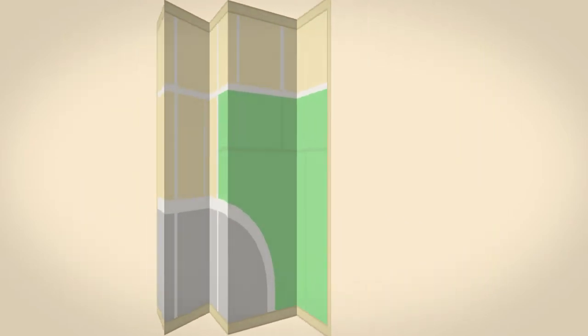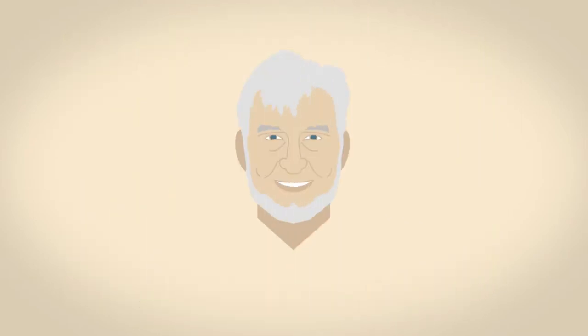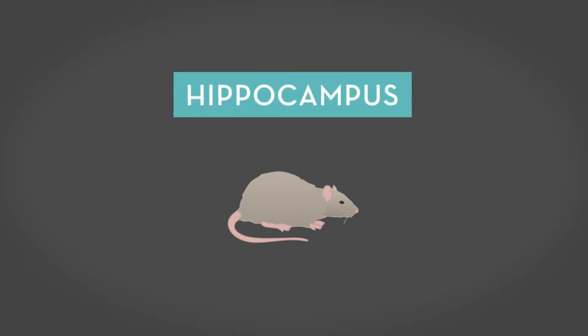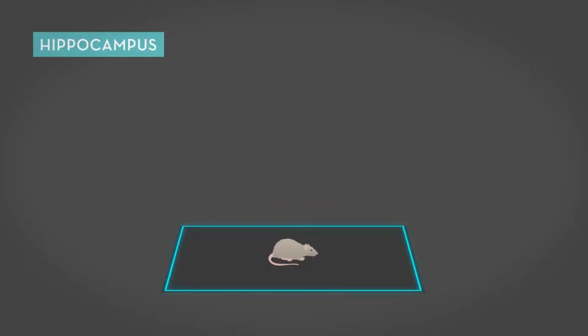But how is it done? Dr. O'Keefe discovered the first component of this positioning system on rats in 1971. He observed some interesting activity from cells located in an area called the hippocampus. Here, certain cells fired every time the rat was in a specific place in the room, while in other places, these cells stayed completely inactive, while other cells were activated.